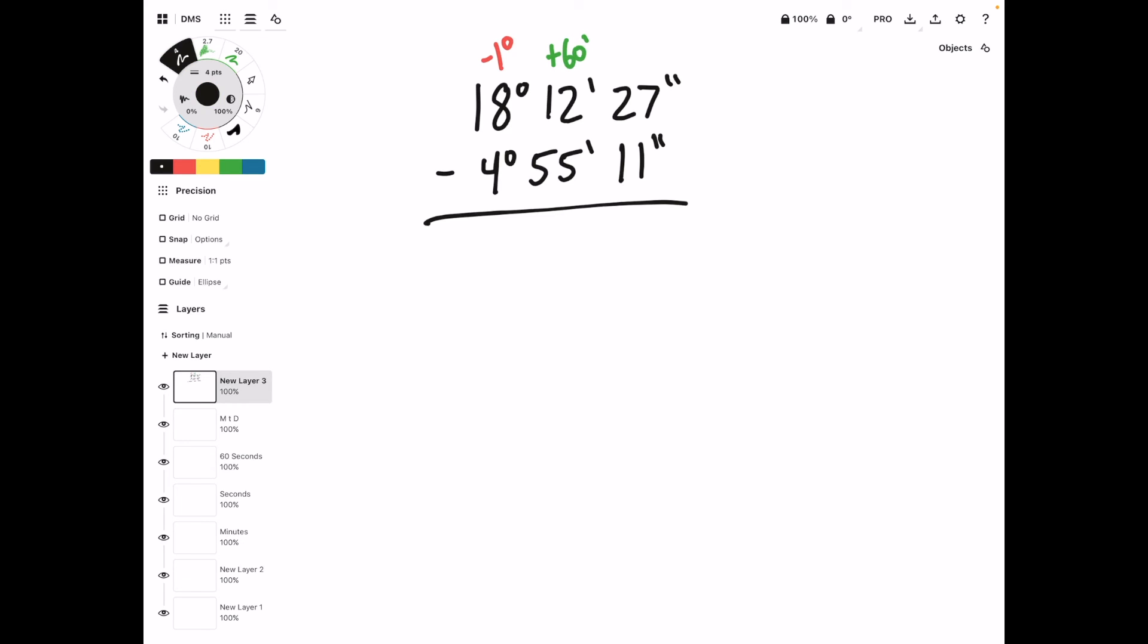This lets us rewrite the expression as 18 degrees. Oops, not 18, we subtracted one. So 17 degrees, and 72 minutes, 27 seconds, minus 4 degrees, 55 minutes, and 11 seconds.